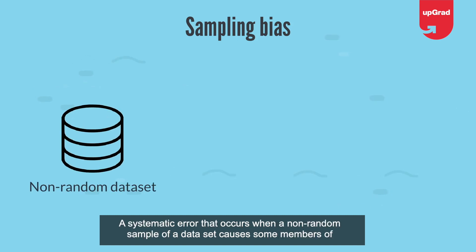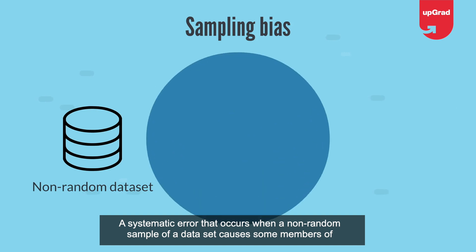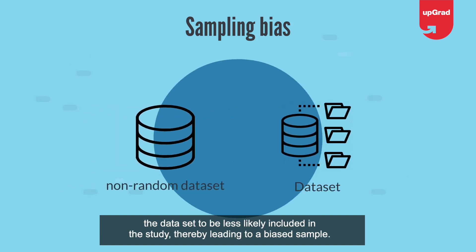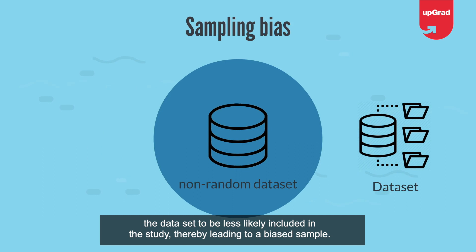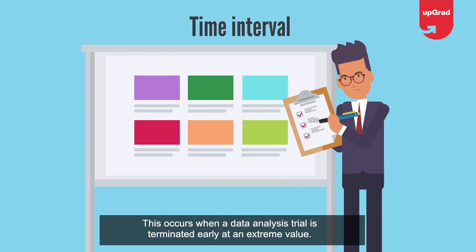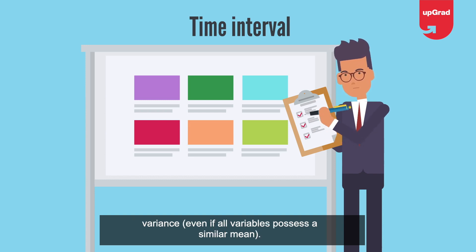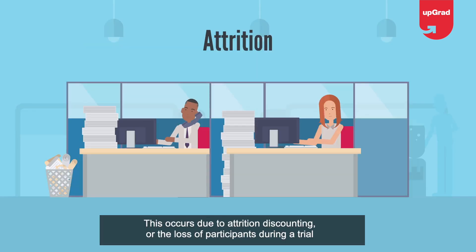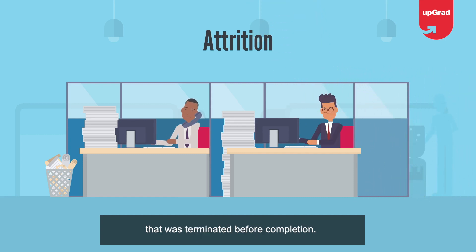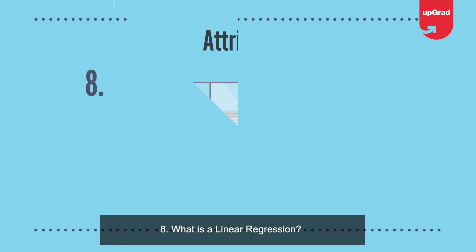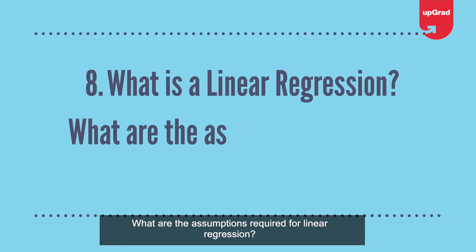There are three types of selection bias: Sampling bias—a systematic error that occurs when a non-random sample causes some members to be less likely included, leading to a biased sample. Time interval—occurs when a trial is terminated early at an extreme value; the extreme value can be attained more likely by the variable with the largest variance. Attrition—occurs due to loss of participants during a trial that was terminated before completion.